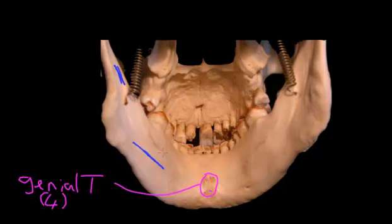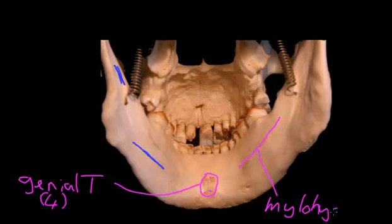The other really obvious feature is this ridge running along here — can you see that ridge? That is called the mylohyoid ridge. It's a ridge where the mylohyoid muscle attaches, and that mylohyoid muscle swings from one side to the other, forming the floor of the mouth. The tongue sits on top of that muscle.